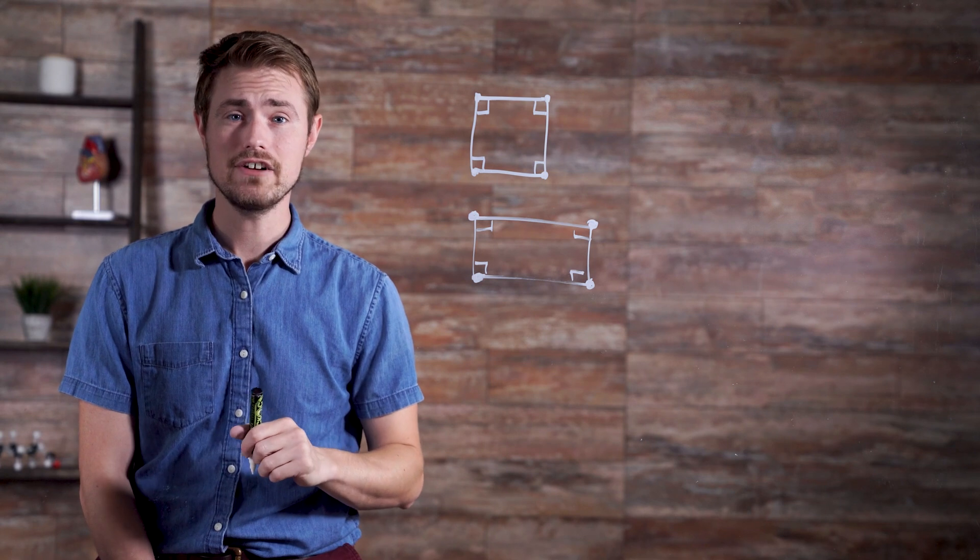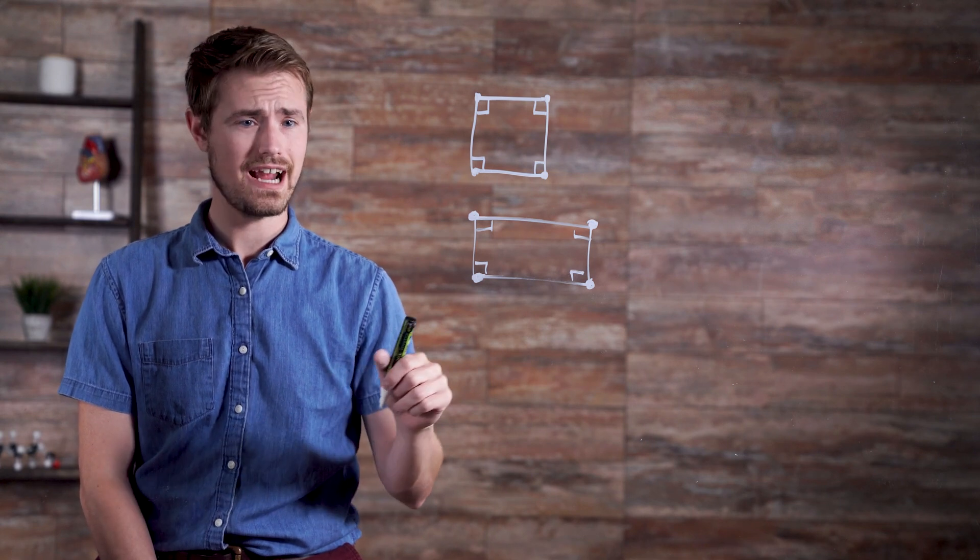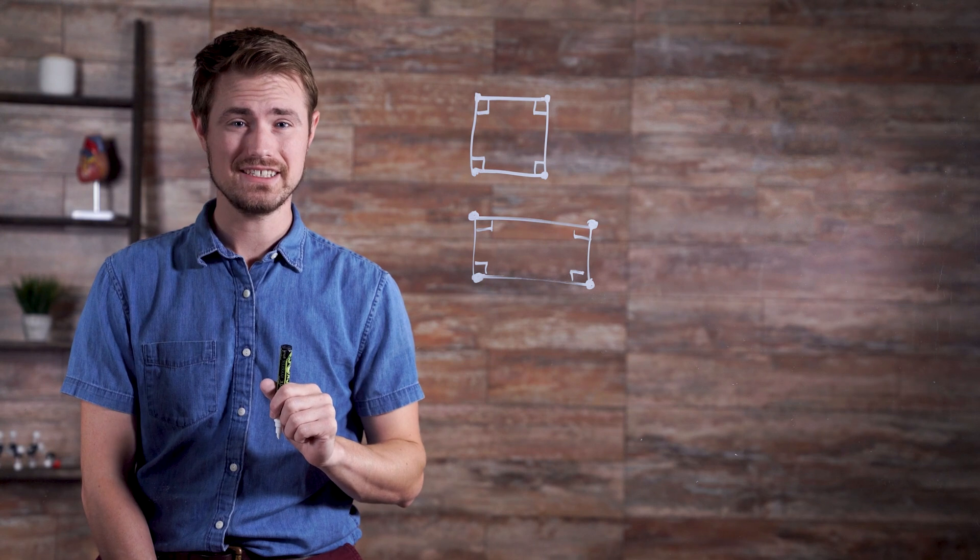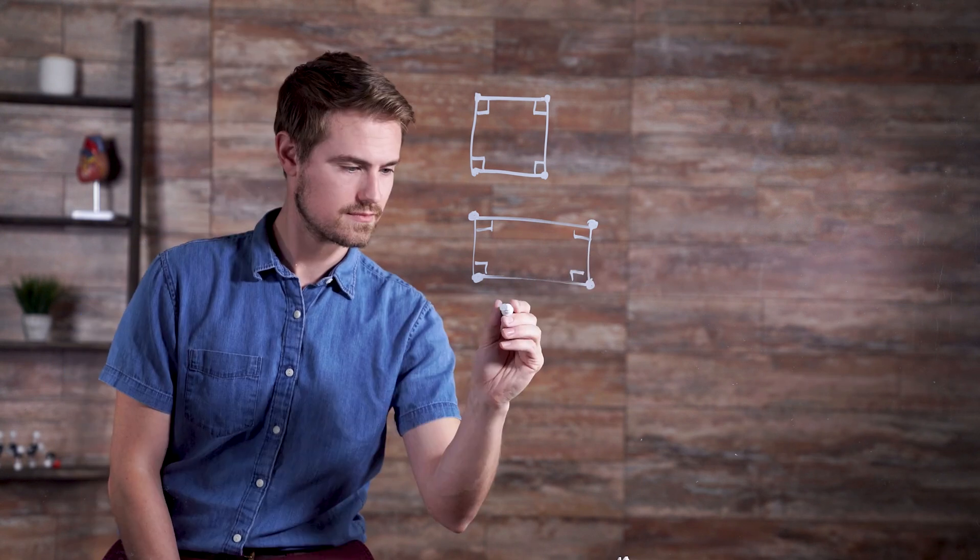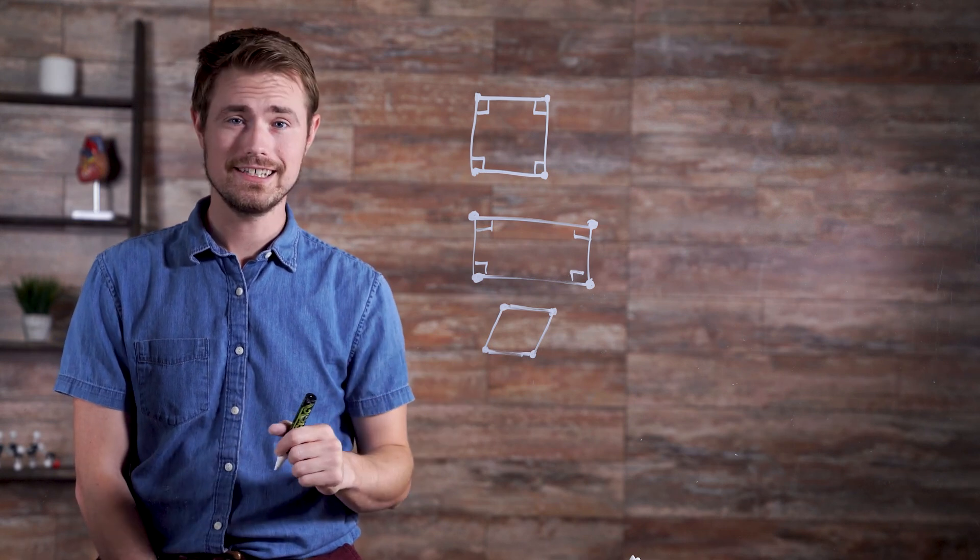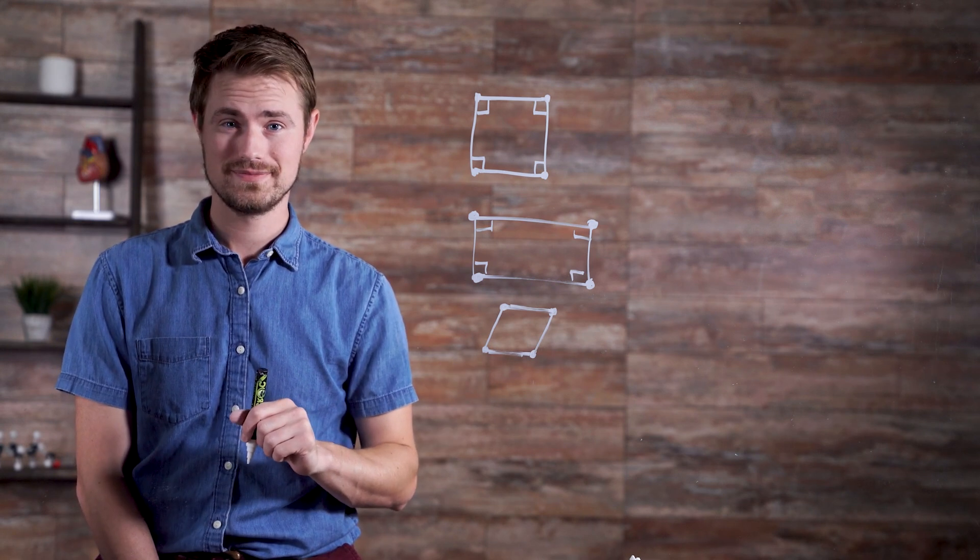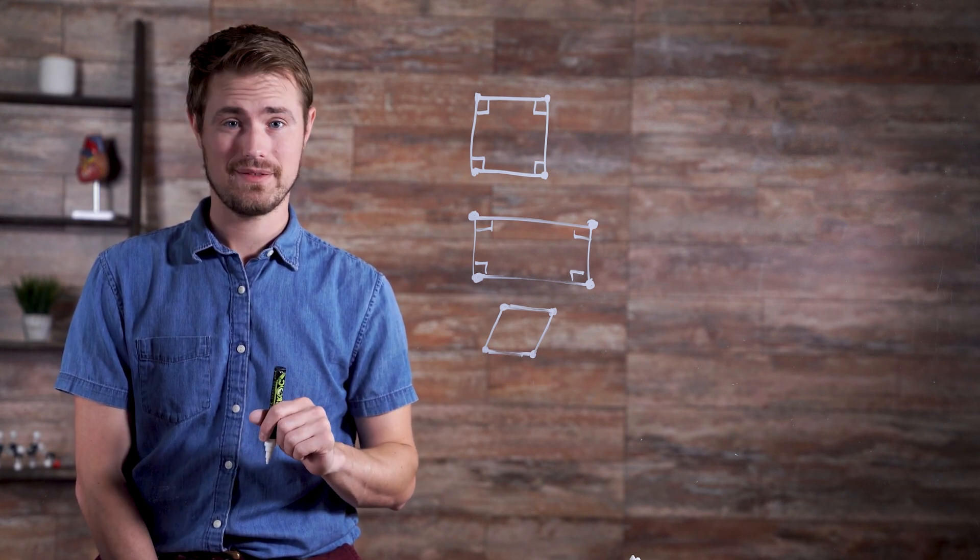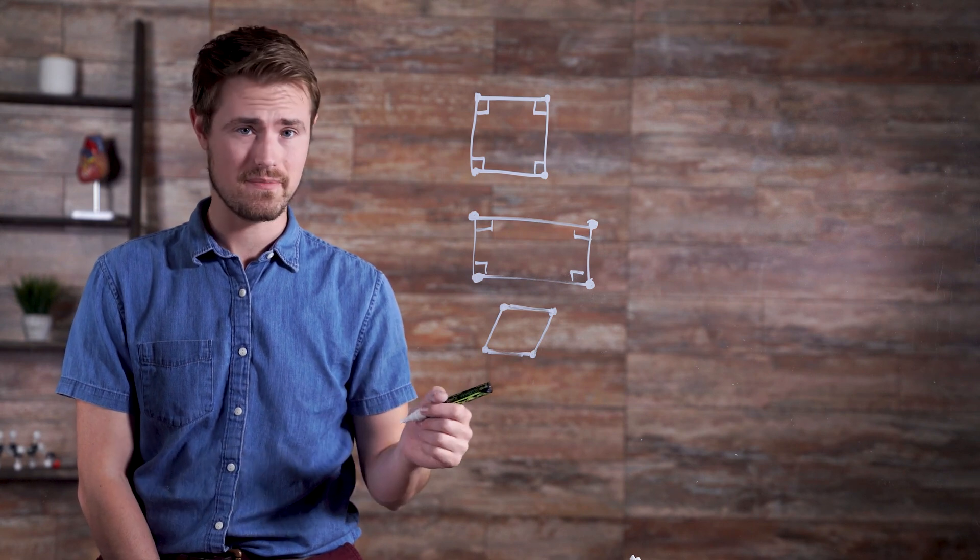This is an irregular quadrilateral. The vertices have the same measure, but the edges have different lengths. This is an irregular quadrilateral. The edges are the same length, but the vertices have different measures.